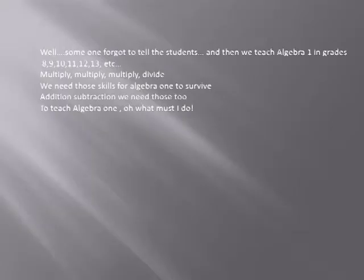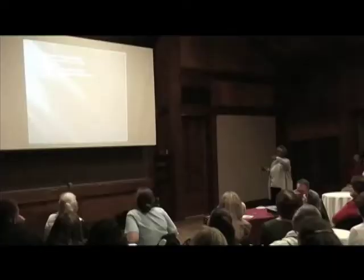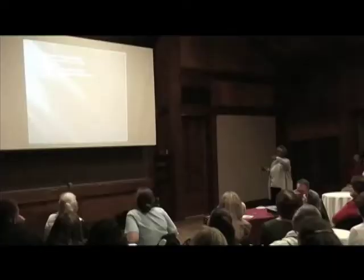Multiply, multiply, divide — we need those skills to keep math alive. Algebra 2: your terms are still combined, polynomials are entwined, the fractions are complex, variations direct and indirect. Some numbers become imaginary, but functions take on other forms. Still we multiply, add, and divide — we know enough to make mathematics come alive.